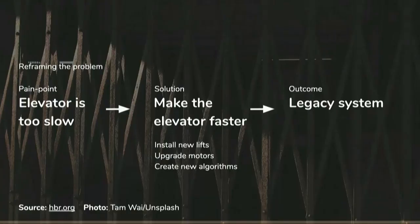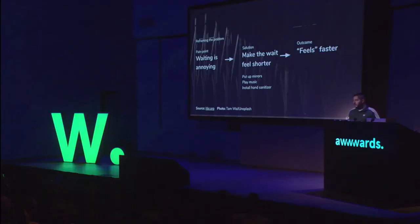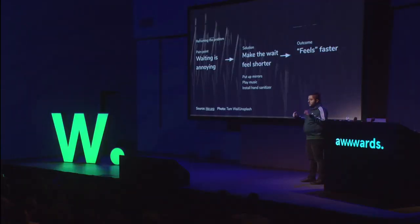So you reframe the problem. It's not so much that the elevator is too slow — it's the waiting that's annoying. So what building managers do is put up mirrors, play music, and install a hand sanitizer. And magically, it feels faster. In the talk, I'm going to give some UX examples of the equivalents you can actually do. This is usually the first step for anyone who wants to build for speed.